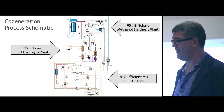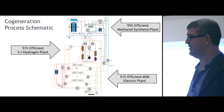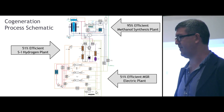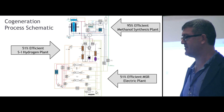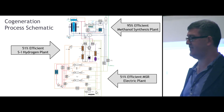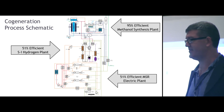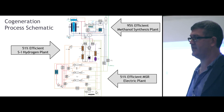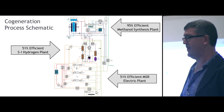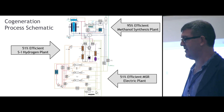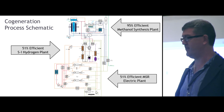My proposal is a cogeneration plant: a combination of a 50%-efficient MSR plant using a combination of Brayton and Rankine cycles to get that efficiency up, and then a 50%-efficient sulfur-iodine conversion plant. Those numbers are strangely well matched — you can get the same amount of electricity or hydrogen for the same amount of energy input. At the end, I've added a methanol synthesis plant, which takes that product stream and turns it into an easily storable and transportable form of energy.